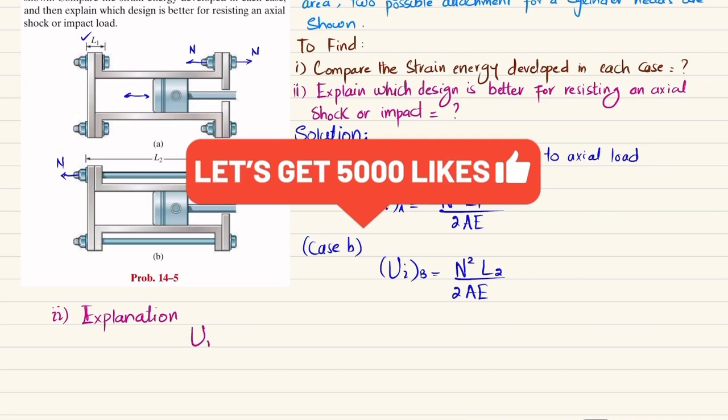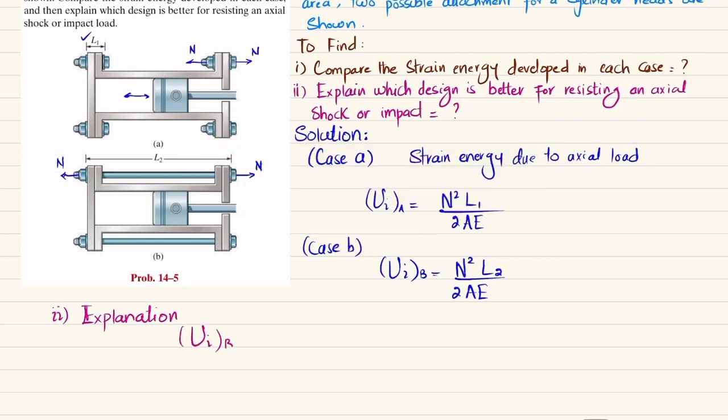So the explanation is: you can see Ui for B is greater than Ui for A. Why? Because here length is increased—all other factors are the same, but length is increased in case B. Therefore, Ui for B is greater than Ui for case A.